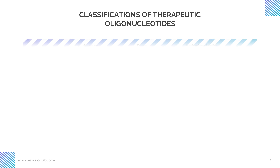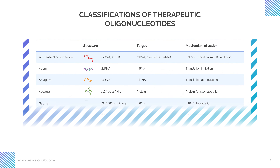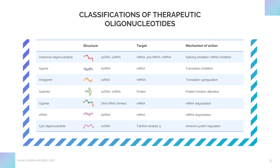Oligonucleotides are involved in many types of nucleic acid-based therapeutics, including antisense oligonucleotide, agomere, antagomere, aptamer, gapmere, small interfering RNA, and unmethylated CpG-containing oligonucleotides.